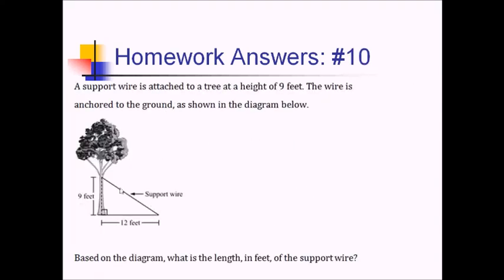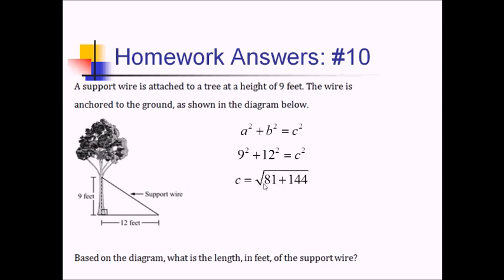For number ten, we have a support wire for a tree with a height of 9 feet, anchored to the ground 12 feet away. This is basically a Pythagorean theorem problem — we've got a right triangle and we're just looking for the hypotenuse. So we'll use a squared plus b squared equals c squared: 9 squared plus 12 squared equals c squared. That's 81 and 144, which add up to 225. The square root of 225 is 15, so 15 feet. You also might have recognized this as a 3-4-5 triangle multiplied by 3.